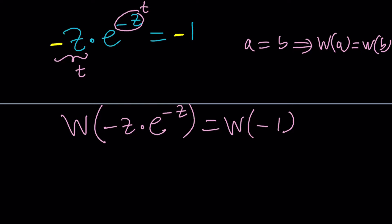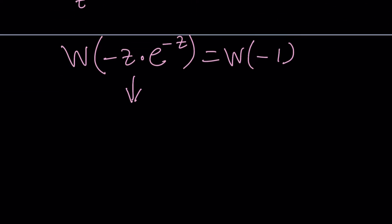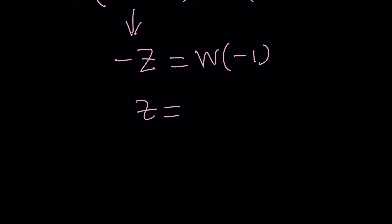So, what does this give us? What's the output? Think about it. T e to the T, it's going to be T, which is negative z. And now, all I have to do is negate both sides, and z becomes negative W of negative 1. In other words, whatever the product log of negative 1 is, we're going to take the opposite of that.